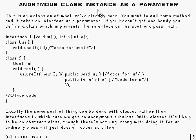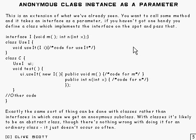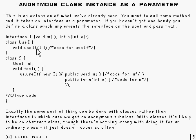This is using an anonymous class as a parameter, and it's very similar to what you've seen already. You want to call some method, and the method takes something of an interface type as one of its parameters. Now if you haven't got a class handy that implements that interface, you can just make one on the spot and pass that. Here's the interface — it's got a couple of methods in it, m and n, and there's a class that uses it.